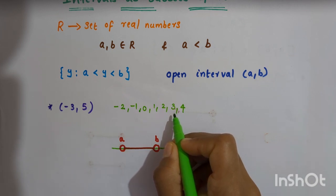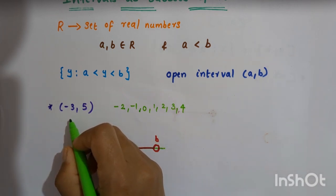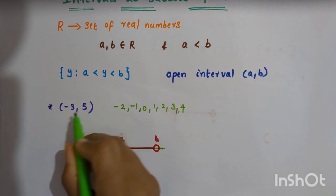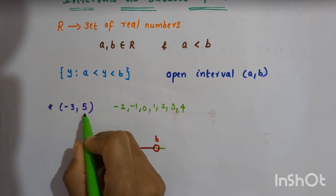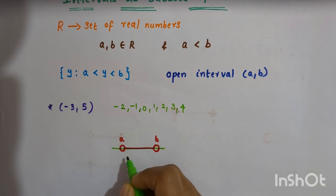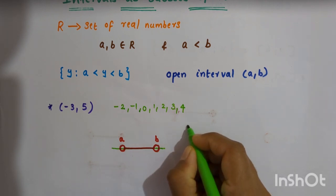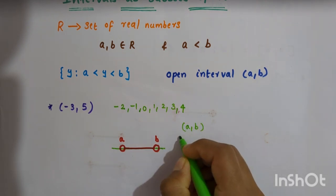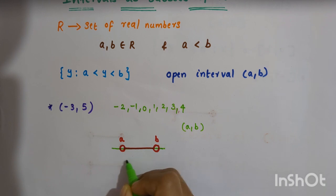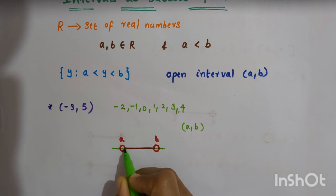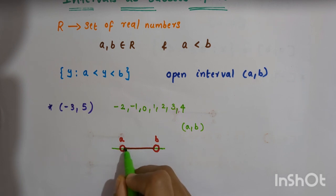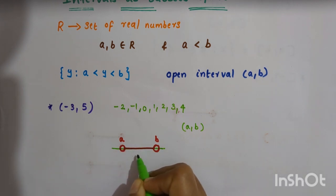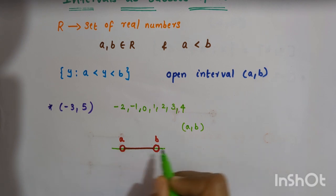When we write the elements in this open interval, we do not consider -3 and 5 — these two numbers do not belong to this interval. On a real number line, we represent an open interval (a, b) like this: the interval does not contain the two endpoints a and b, so it is drawn with open circles joined by a straight line.